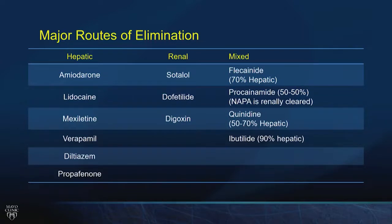It's important to know the major routes of elimination. Renally cleared drugs: sotalol, dofetilide, and digoxin — always monitor DIG levels in renal failure. When starting sotalol or dofetilide in hospital, always check kidney function first. Hepatically cleared drugs: amiodarone, lidocaine (patients in cardiogenic shock have poor hepatic perfusion and don't clear lidocaine, leading to toxicity). Verapamil and diltiazem are cytochrome P450-related. Flecainide, procainamide (with NAPA caveat), quinidine, and ibutilide have mixed elimination.